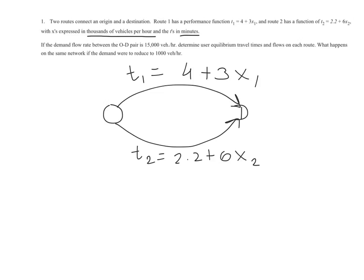The question then is, at what demand level does route 1 become competitive? The first route becomes competitive at the point where 2.2 plus 6x2, the travel time on route 2, becomes so high that it exceeds or becomes equal to 4 minutes of travel time. So under this scenario, 2.2 plus 6x2 equals 4. And you can solve this for x2, and you will get 0.3 for x2. And because this is in thousands of vehicles per hour, I can say this is 300 VPH.